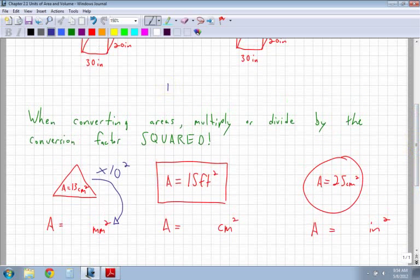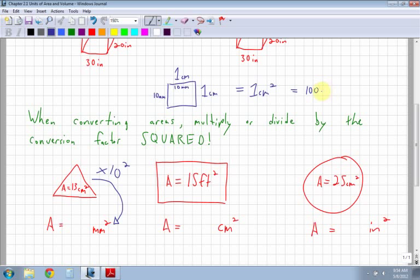The reason is, if I have 1 centimeter by 1 centimeter, that's 1 times 1, which equals 1 centimeter squared. What about millimeters? It's 10 millimeters across and 10 millimeters down. So 10 by 10 equals 100 millimeters squared. I multiplied by 10 squared, or by 100.